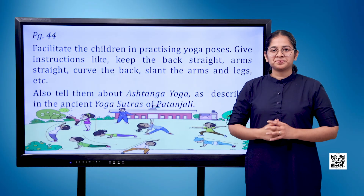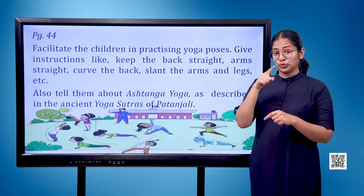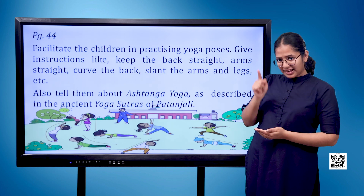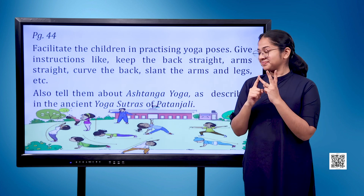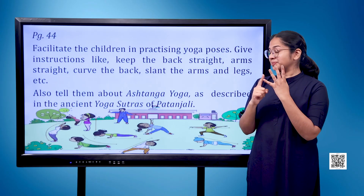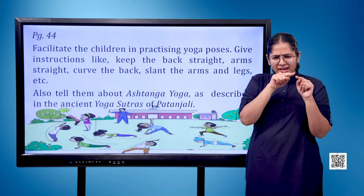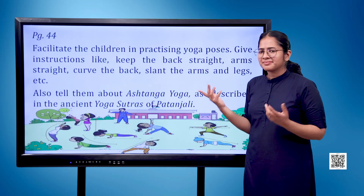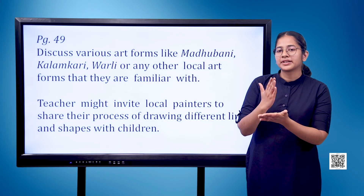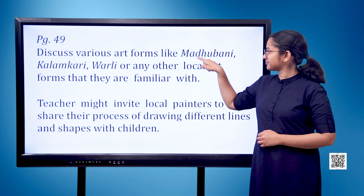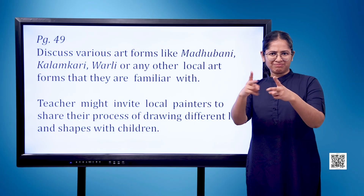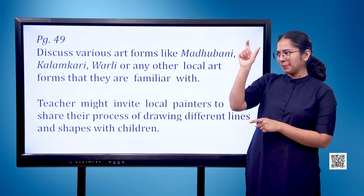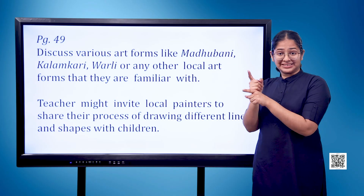Facilitate the children in practicing yoga poses. Give instructions like: keep the back straight, arms straight, curve the back, slump the arms and legs, etc. Also tell them about Ashtanga Yoga as described in the ancient Yoga Sutras of Patanjali. Discuss various art forms like Madhubani, Kalamkari, Warli, or any other local art forms that children are familiar with. Teachers might invite local painters to share their process of drawing different lines and shapes with children.